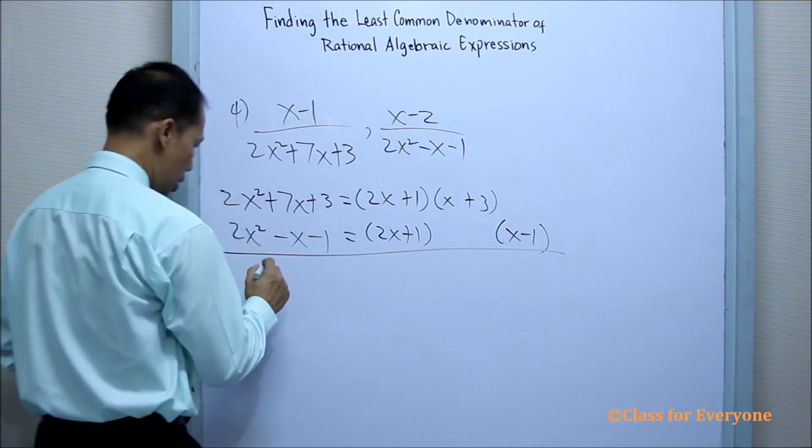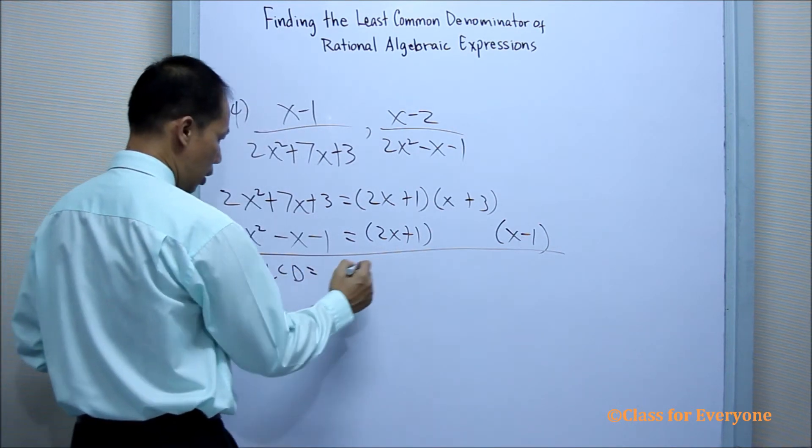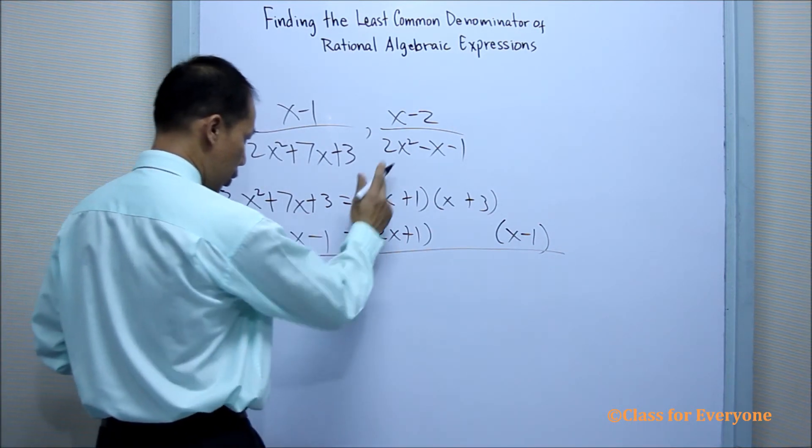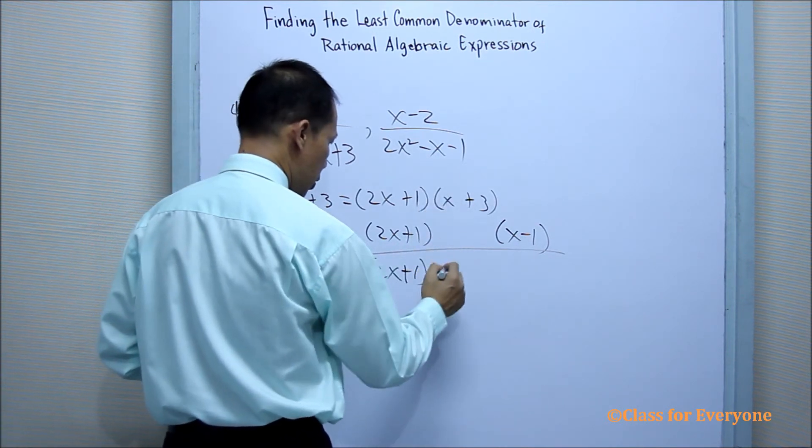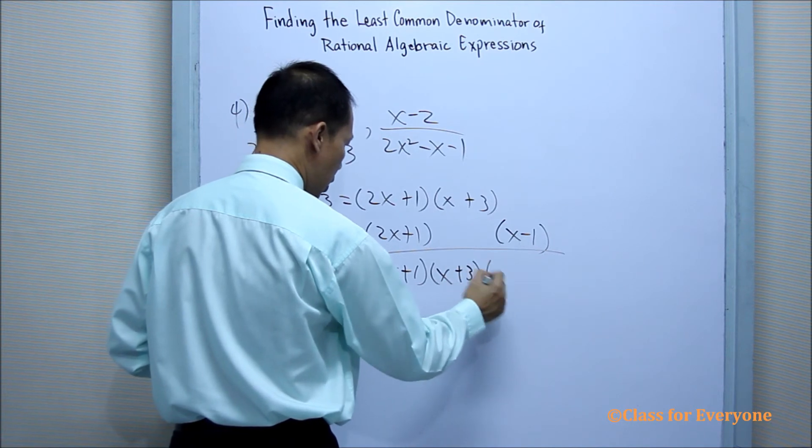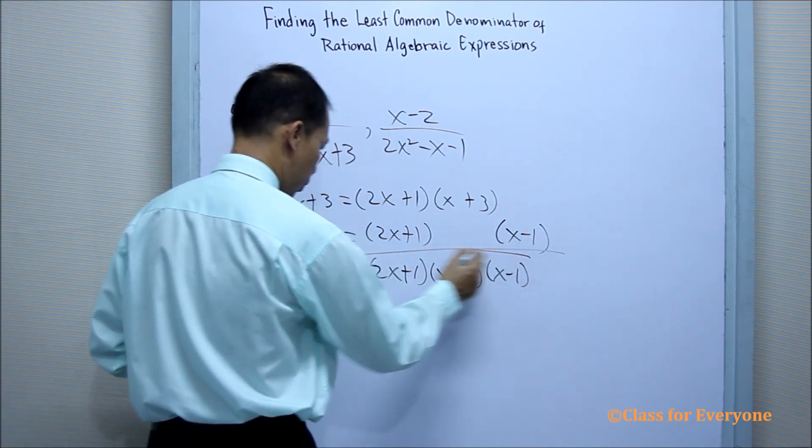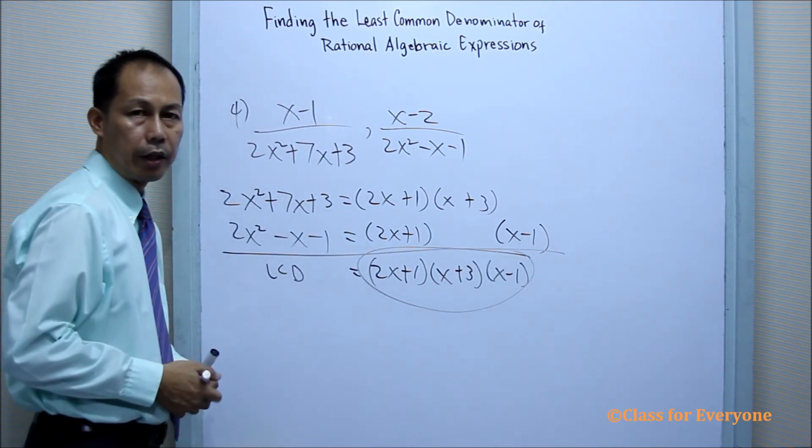For our LCD, it will then be the same 2x plus 1, the common factors. And these are different: x plus 3 and x minus 1. Our LCD.